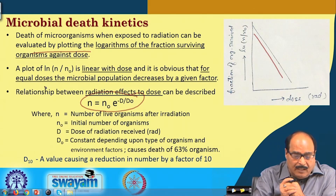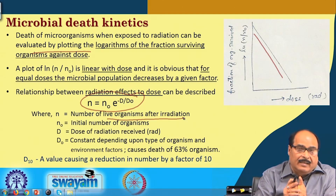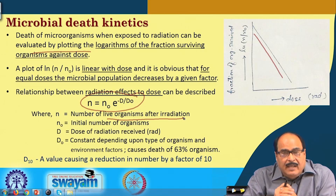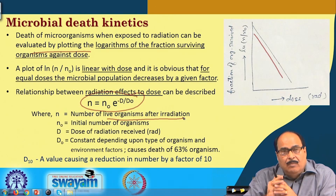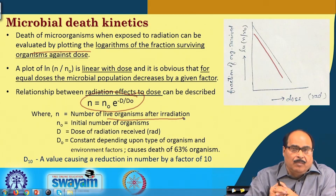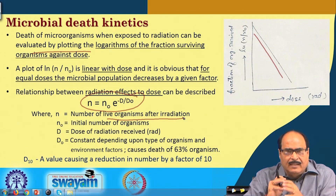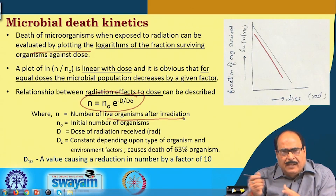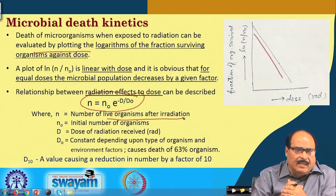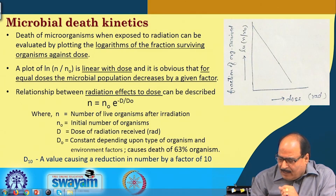In the equation N = N₀ · e^(−D/D₀), N is the number of live organisms after irradiation, N₀ is the initial number of organisms in the food, D is the dose of radiation received, and D₀ is a constant depending on the type of organism and environmental factors. D₀ is generally considered the radiation dose that causes 63 percent death of the available organisms. Depending on the process, other factors such as the D₁₀ value — the dose causing a tenfold reduction in microorganism count — can also be considered.